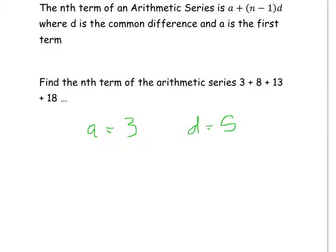Now all we do is plug our values into the equation A plus N minus 1 times D. So A is 3, and D is 5. You might want to put the 5 in front. Now that is the nth term rule for an arithmetic sequence.